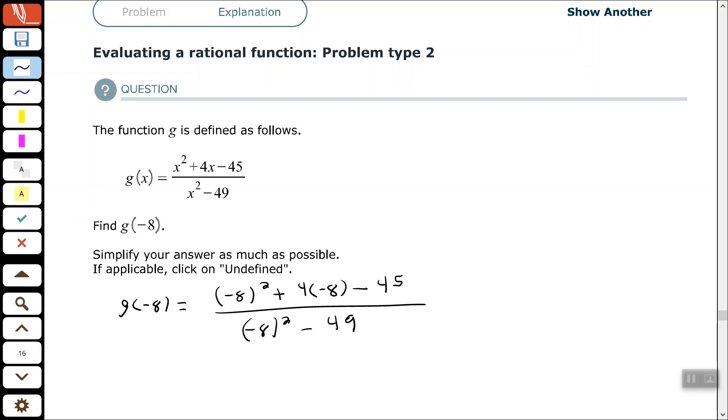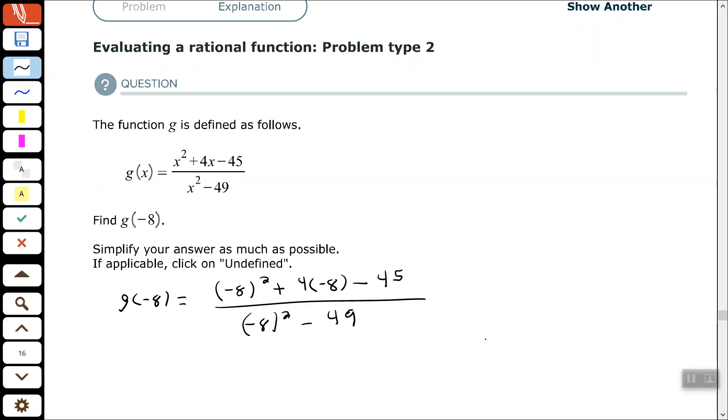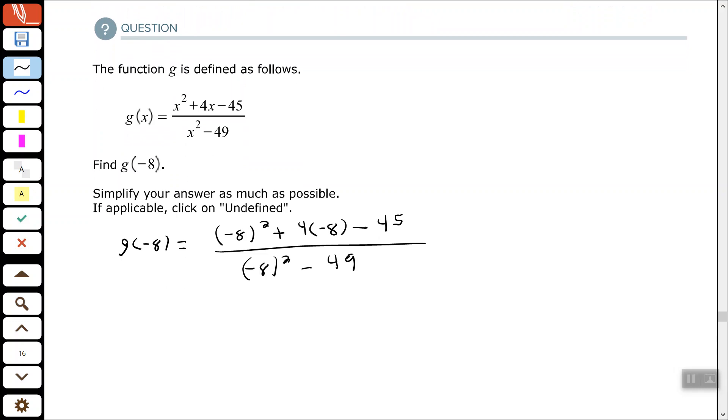So we have (-8)² + 4(-8) - 45 all over (-8)² - 49, and then from here we just simplify.